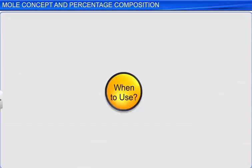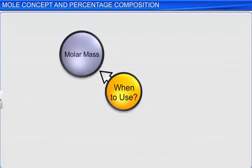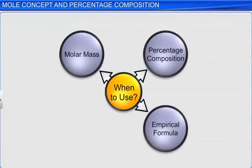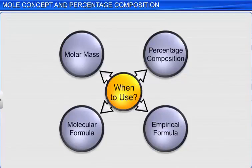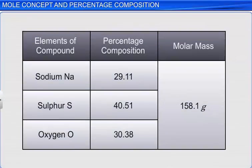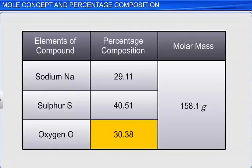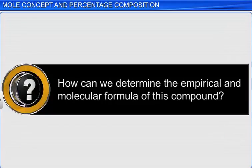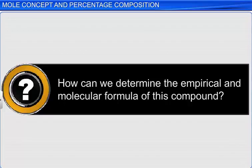We've learned how to calculate molar mass, percentage composition, empirical formula, and molecular formula. But when do we apply these calculations in chemistry? Let's say we have conducted an experiment and obtained a compound that has 29.11% sodium, 40.51% sulfur, and 30.38% oxygen, and the molar mass of the compound is 158.1 grams. How can we determine the empirical and molecular formula of this compound?